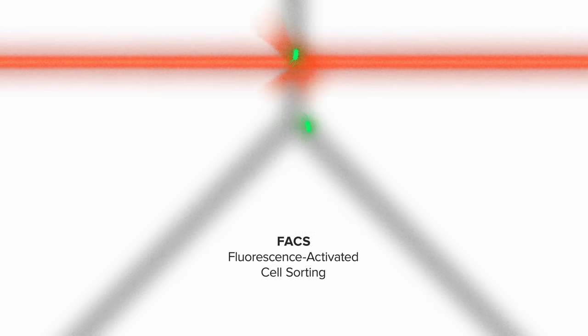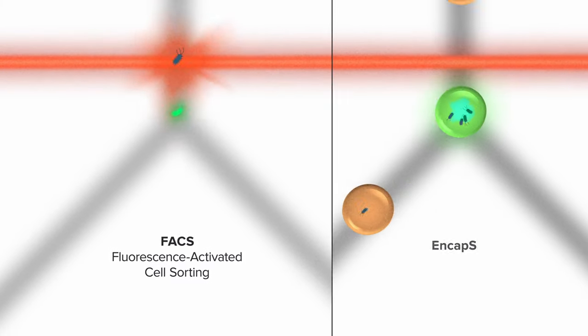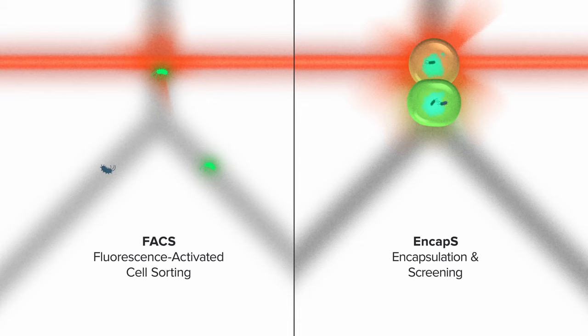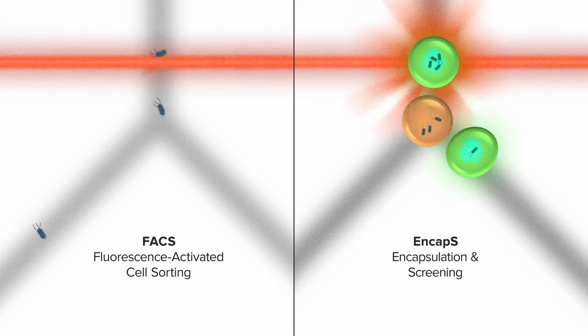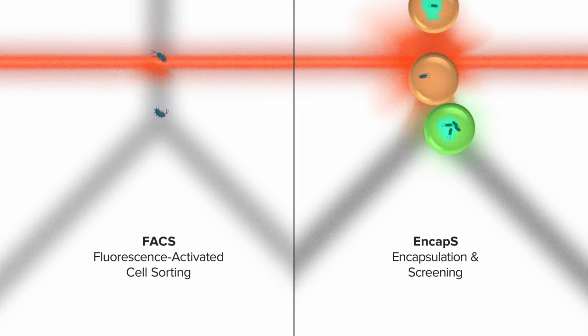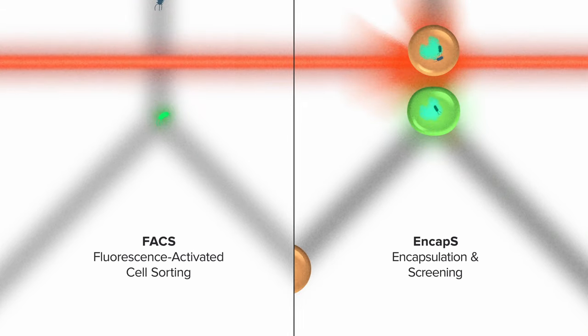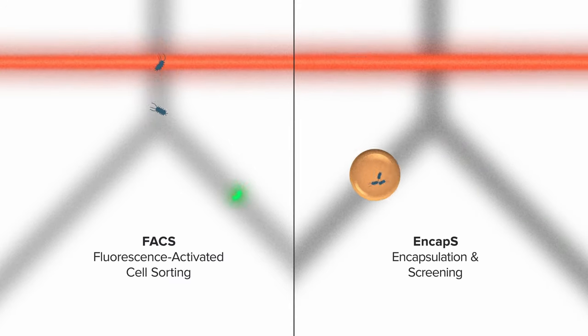You might have heard of other methods that use lasers to sort out individual bacteria, like FACS — fluorescence-activated cell sorting. The key difference is that FACS doesn't package cells with their surrounding media, but NCAPS does. That means NCAPS can allow us to select for traits that go beyond the cell itself and affect the surrounding environment.